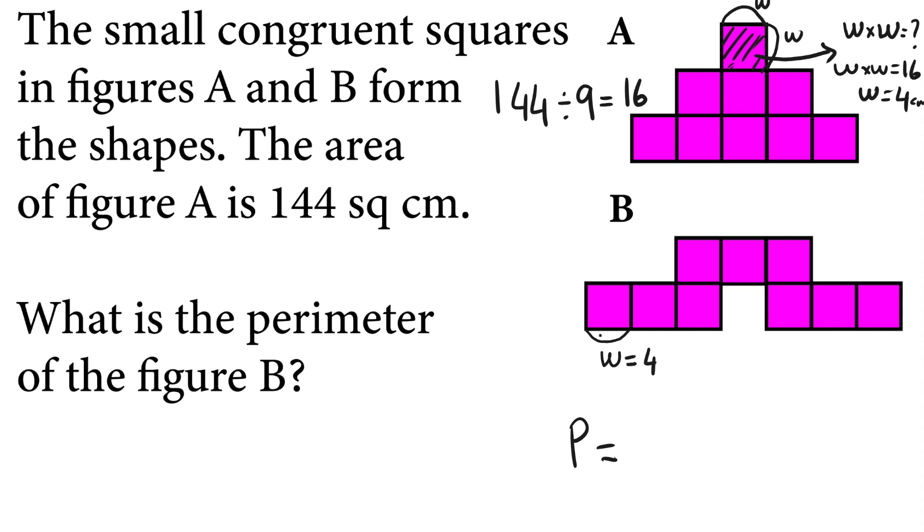How many 4s do we have here? Basically 1, 2—we have 20 side lengths, which is 20 groups of 4. 20 times 4 is 80. 80 centimeters is the perimeter of this composite shape as we see in figure B.